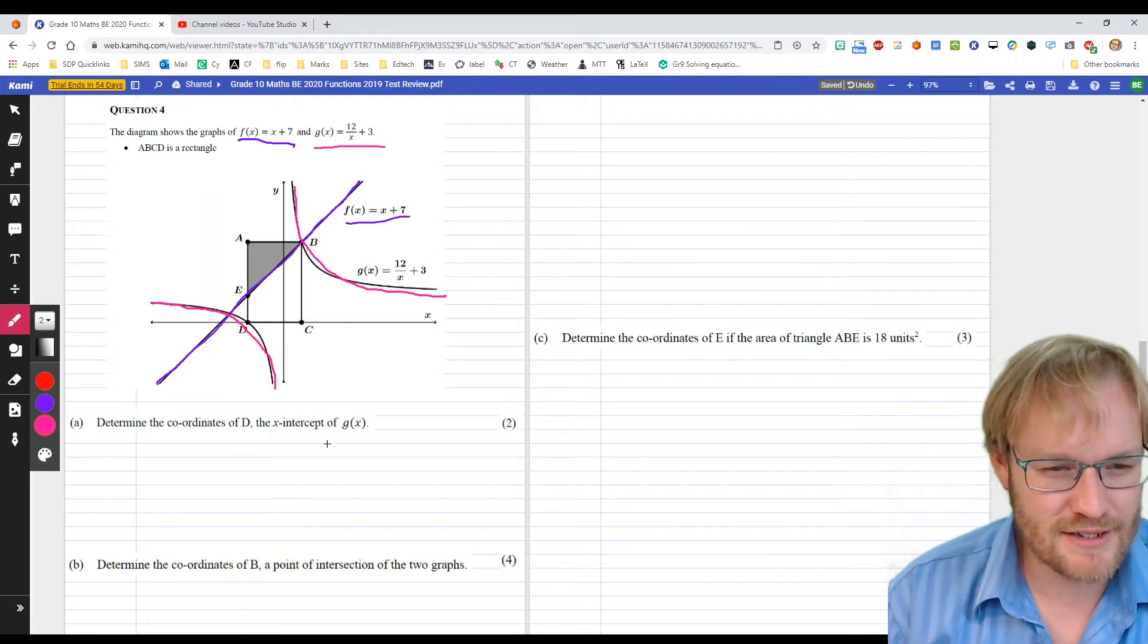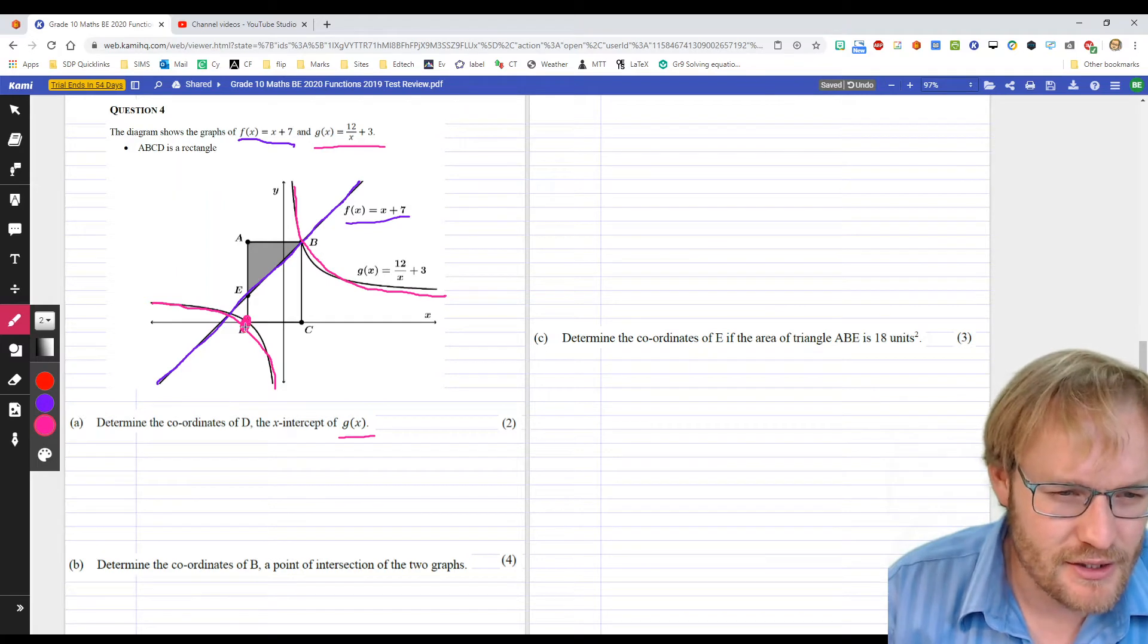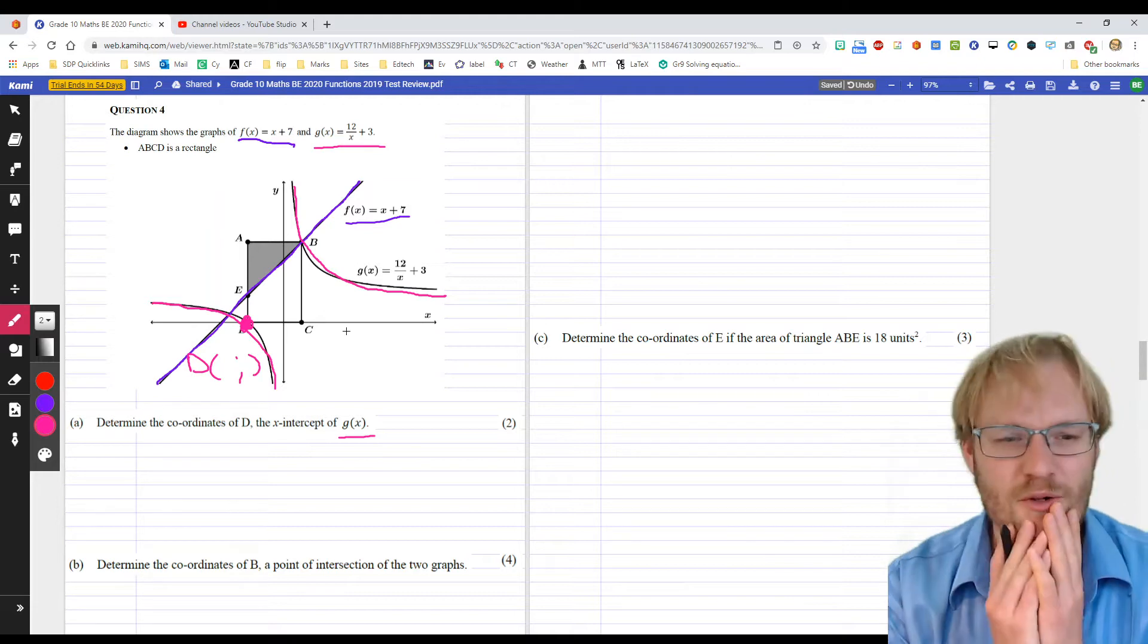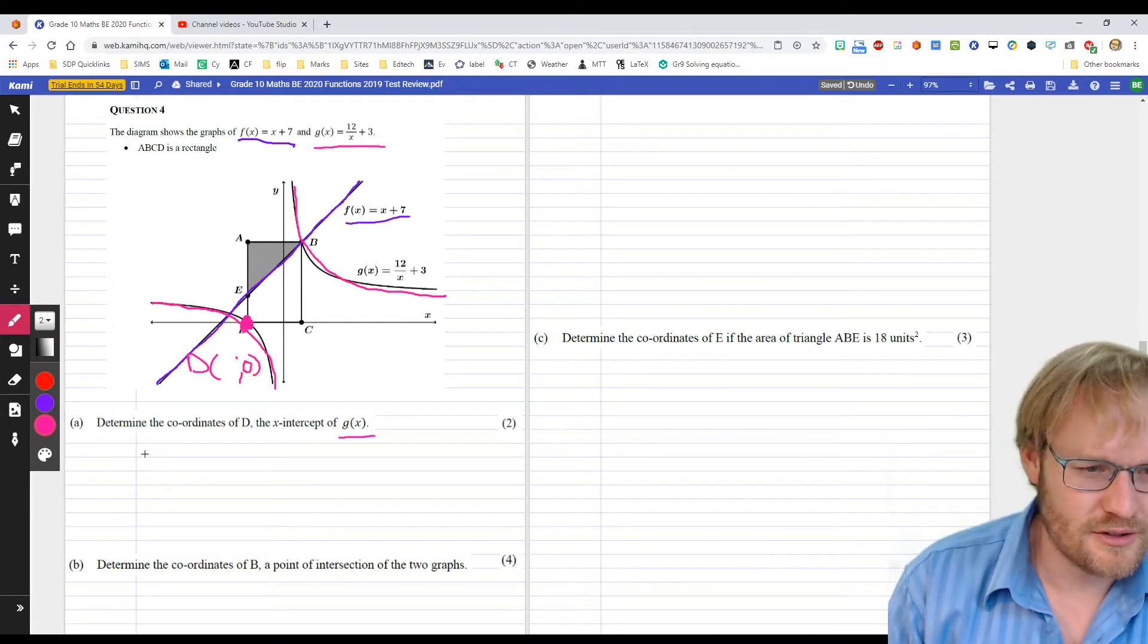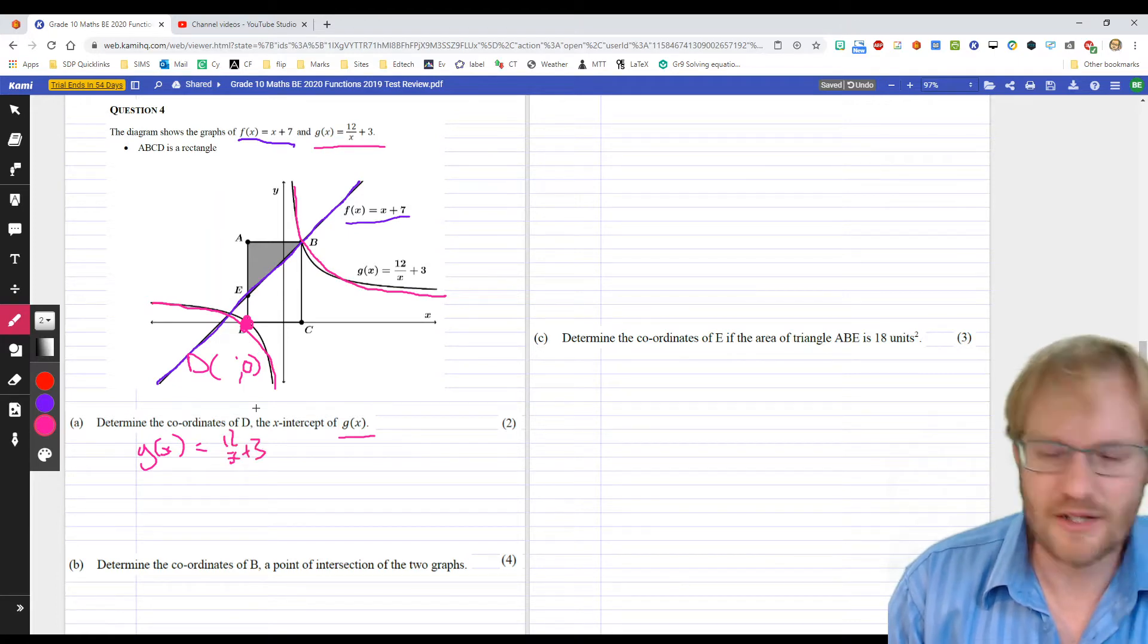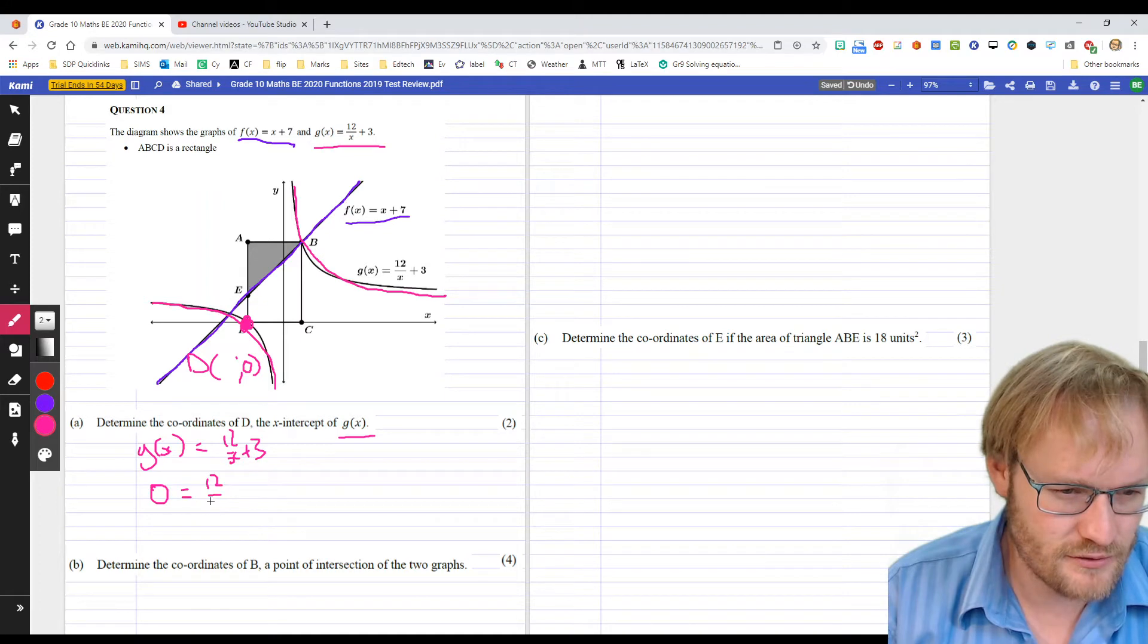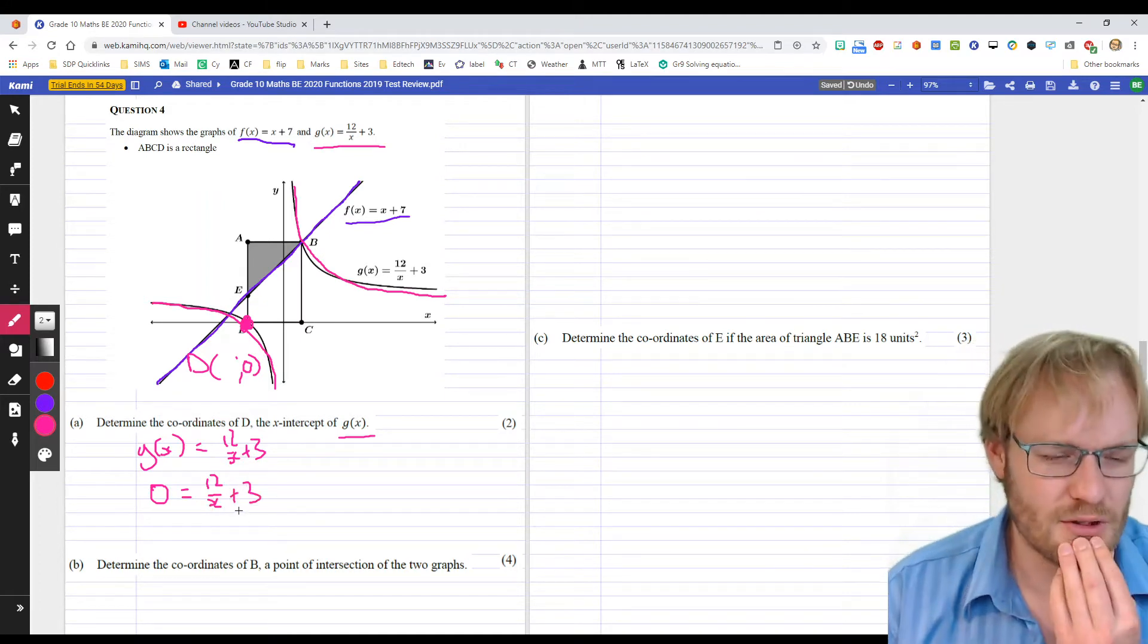So determine the coordinates of D, the X-intercept of G of X. That seems a bit easier now, so that's D, the X-intercept. What do we know about the X-intercept of a function? What's its Y-value? Zero. So, if G of X equals 12 over X plus 3, and we're given the Y-value is 0, so 0 equals 12 over X plus 3. Let's work out what X is.